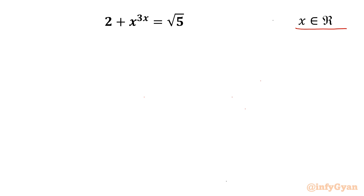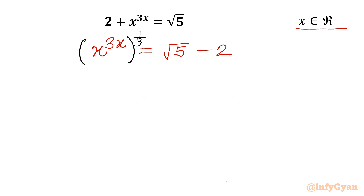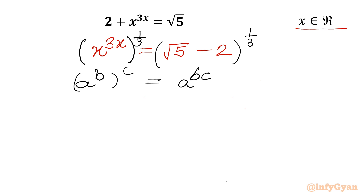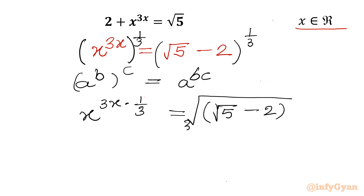Let us get started by writing our equation as x^(3x) = √5 − 2. Now I will take the cube root of both sides, writing power 1/3 on each side. Using the exponential property (a^b)^c = a^(b·c), the LHS becomes x^(3x · 1/3). We can cancel the 3s, so x^x = ∛(√5 − 2).